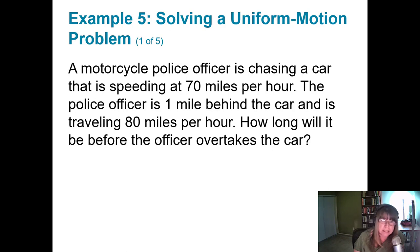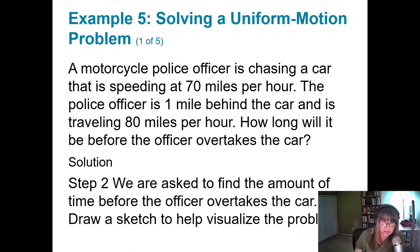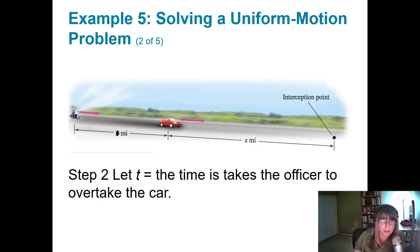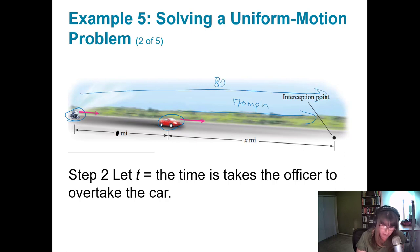A motorcycle police officer is chasing a car that is speeding at 70 miles per hour. The officer is one mile behind the car and is traveling at 80 miles per hour. How long before the officer overtakes the car? The officer will overtake the car because he's traveling faster. It helps to visualize: the car is going 70 mph, the officer is going 80 mph, and they'll meet at some point. We don't know how long that will take, so let time be T.